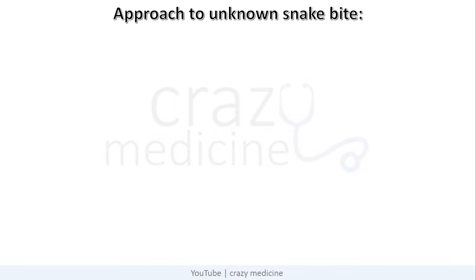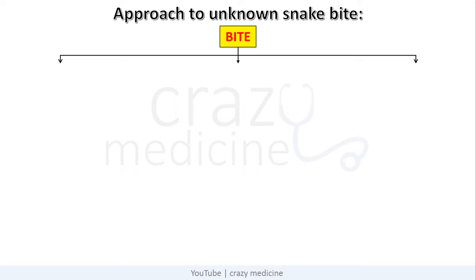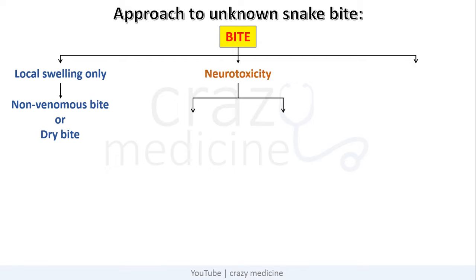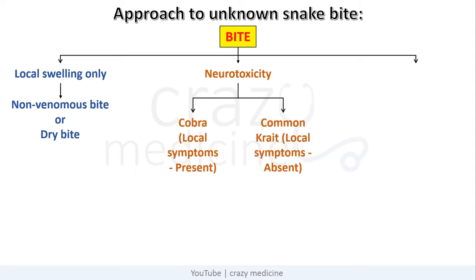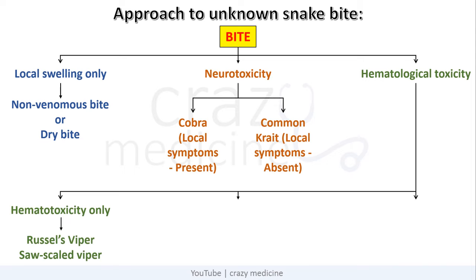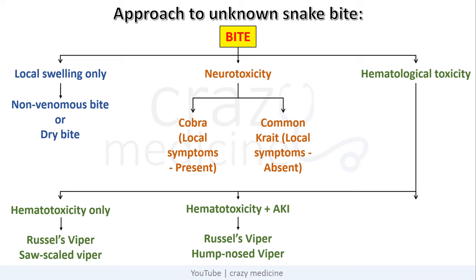What is the approach to an unknown snake bite? If there is local swelling only, it can be either due to a non-venomous snake bite or a dry bite by a venomous snake. If there is neurotoxicity, it can be due to cobra or common krait — with no or minimal local symptoms in krait bite but extensive local symptoms in cobra bite. If there is hematological toxicity only, it can be due to Russell's viper or saw-scaled viper. Hematotoxicity with kidney injury can be Russell's viper or hump-nosed viper. Hematotoxicity with neurotoxicity and kidney injury can only be caused by Russell's viper.